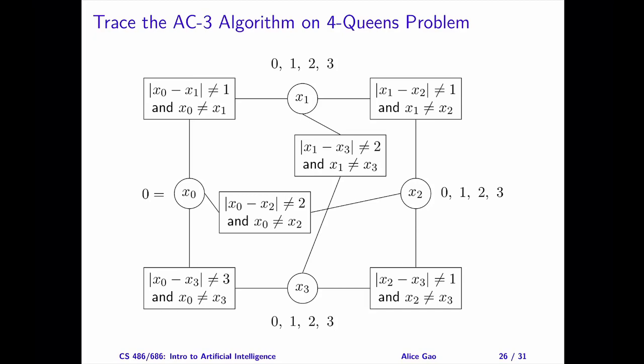Hello everyone, this is Alice Gal. In this video, I'm going to trace the AC3 arc consistency algorithm on the four queens problem. Recall that when we solve the four queens problem using backtracking search, the assignment x0 equals zero does not lead to a solution. This example will show you that we can arrive at the same conclusion by running the AC3 algorithm.